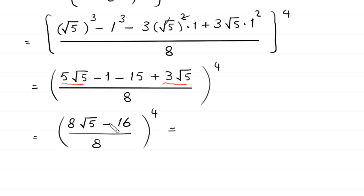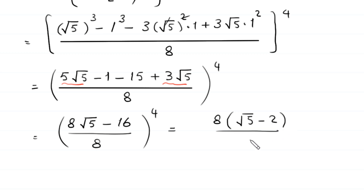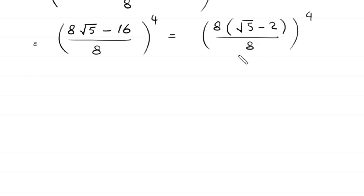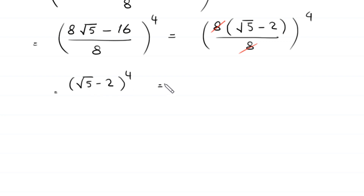From the numerator we can factor out 8 as a common factor, leaving 8 times bracket square root of 5 minus 2, divided by 8, whole to the power 4. The 8 cancels with the 8 in the denominator, and we are left with square root of 5 minus 2, whole to the power 4.